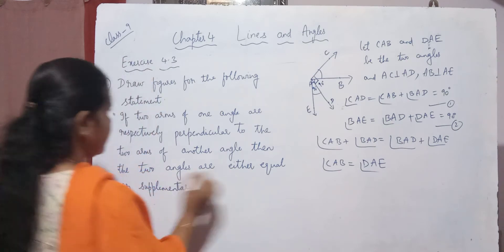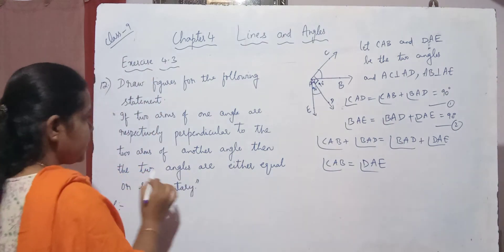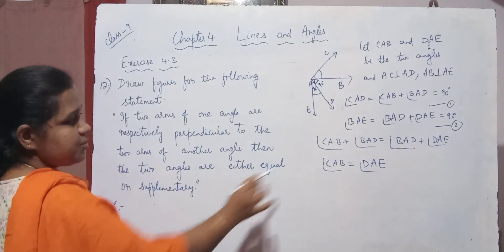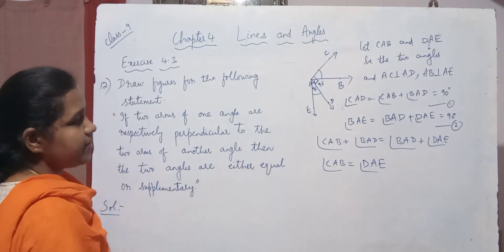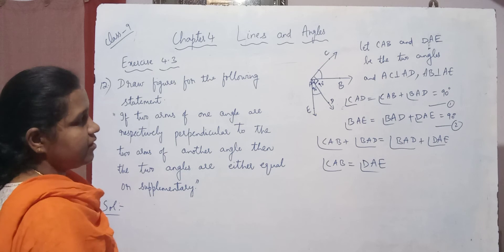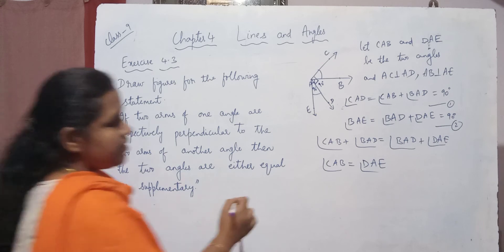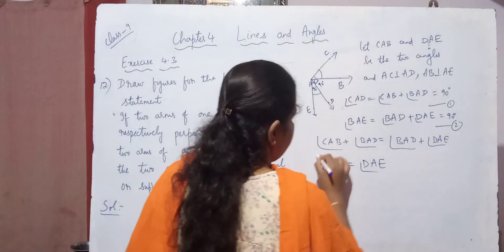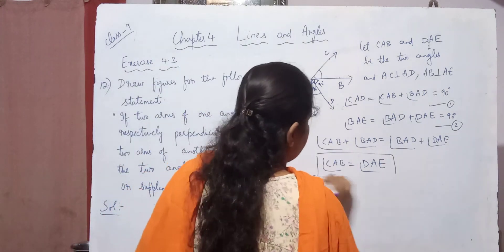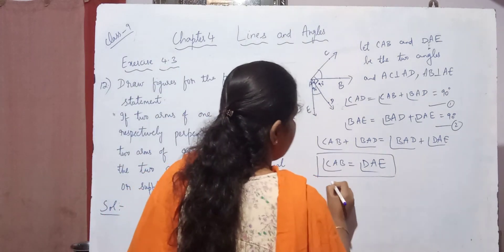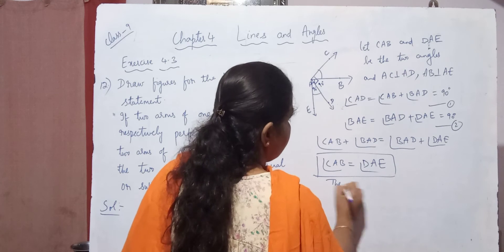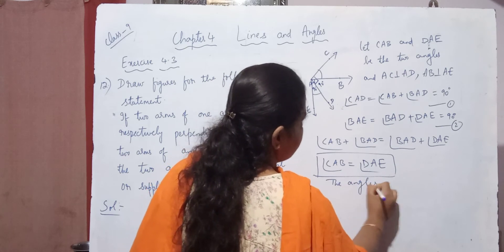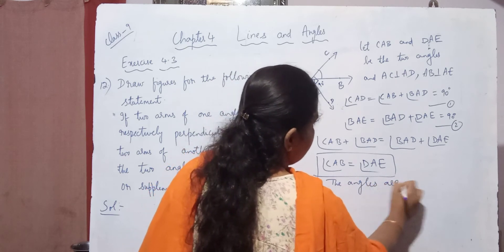We have to show that the two angles are either equal, which means we have shown that they are equal. This is the first condition and it is satisfied — the angles are equal.